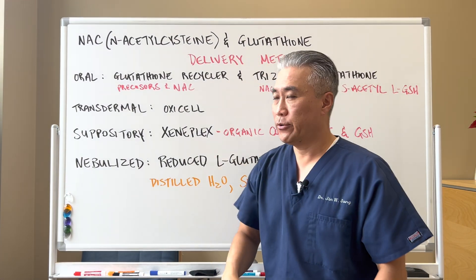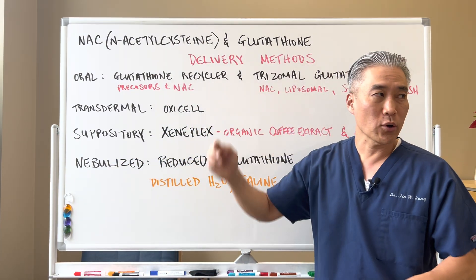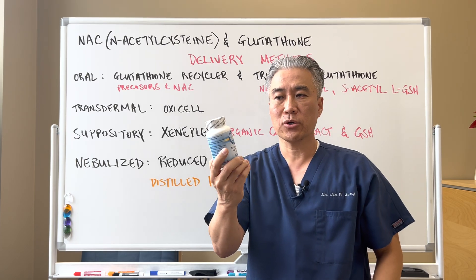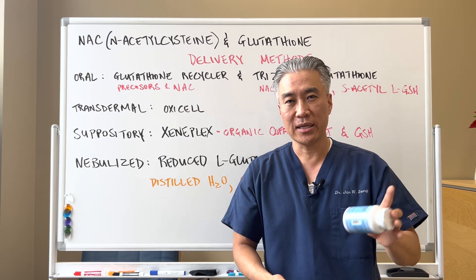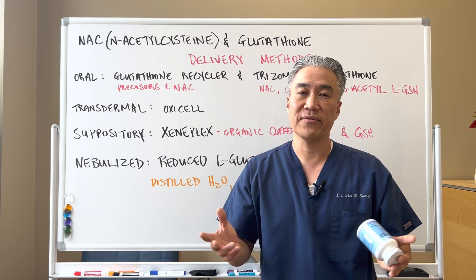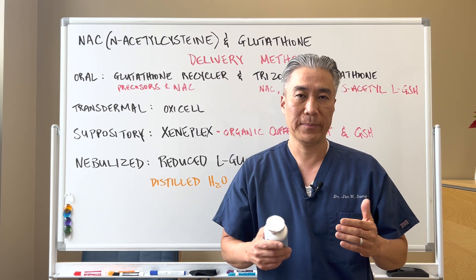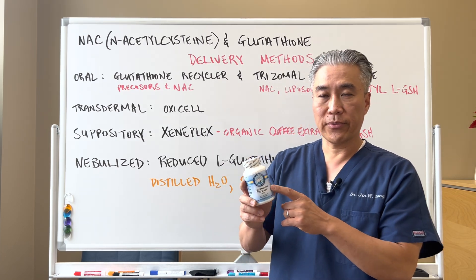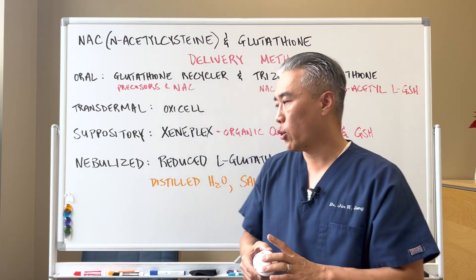NAC and glutathione delivery methods. First, there's oral delivery methods. I use a product called Glutathione Recycler, made by Apex Energetics. I am not sponsored or funded by these nutritional companies — I find that funding might skew my opinion on what's best for my patients. It's just a product I use and really like. Glutathione Recycler from Apex Energetics has all the precursors for glutathione.